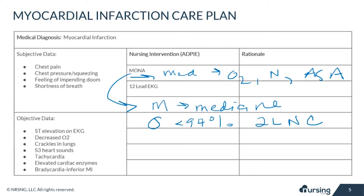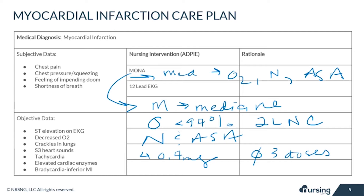Nitroglycerin is the initial medication given along with aspirin. It works as a dilator to help allow blood flow that might be disrupted. Give 0.4 milligrams sublingual, wait five minutes, and if chest pain isn't relieved administer another dose — but no more than three doses total. Make sure blood pressure is being monitored and hold the dose if the systolic blood pressure is less than 90 mmHg.